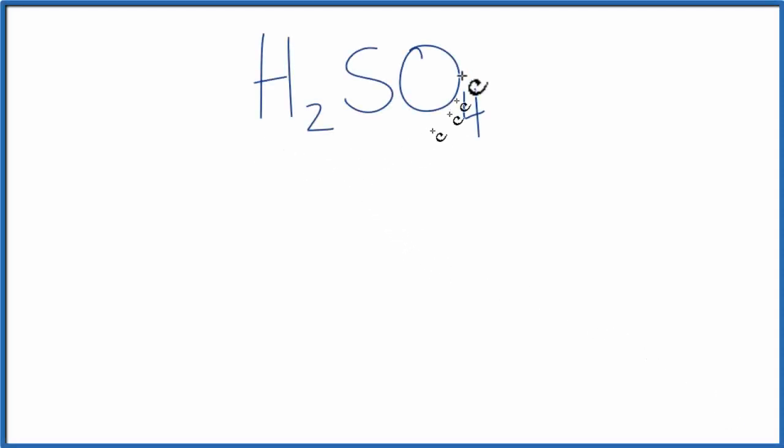If you're asked to find the number of atoms in H2SO4, that's sulfuric acid, here's how you do it. The first thing to realize is that this number here, it's called the subscript, that tells us how many atoms there are of that element symbol in front of it.